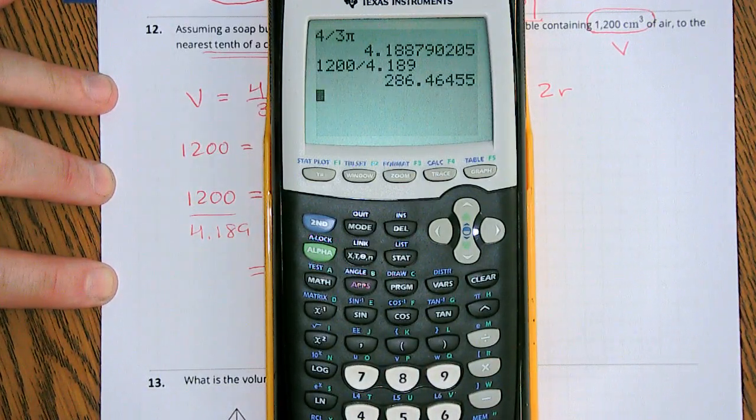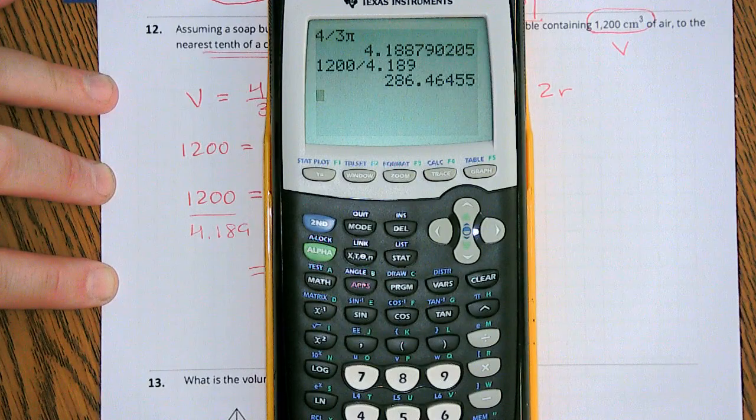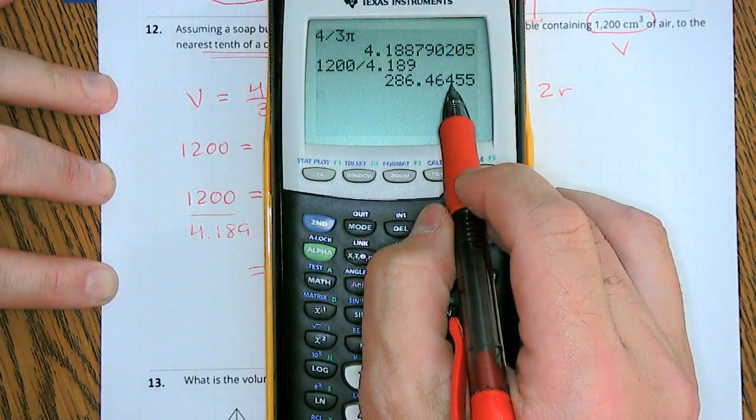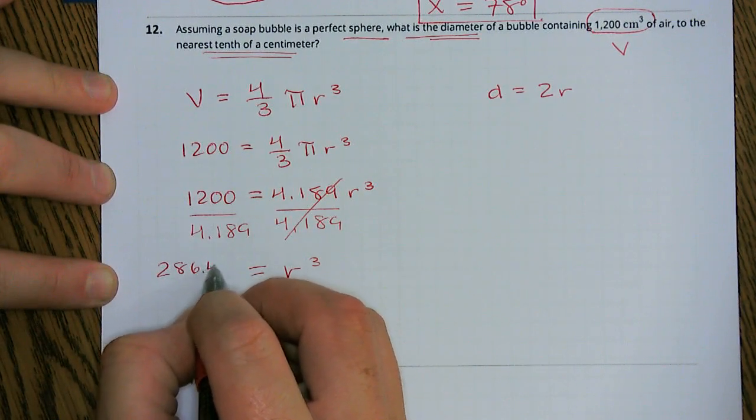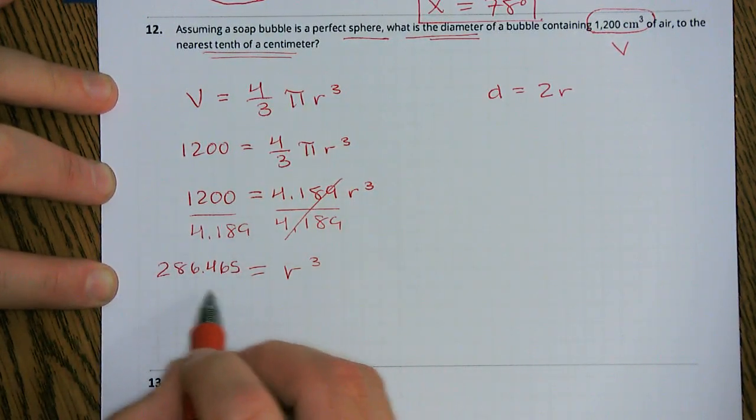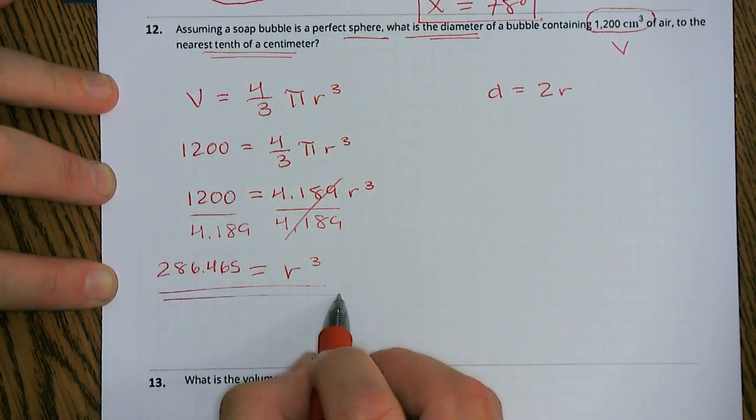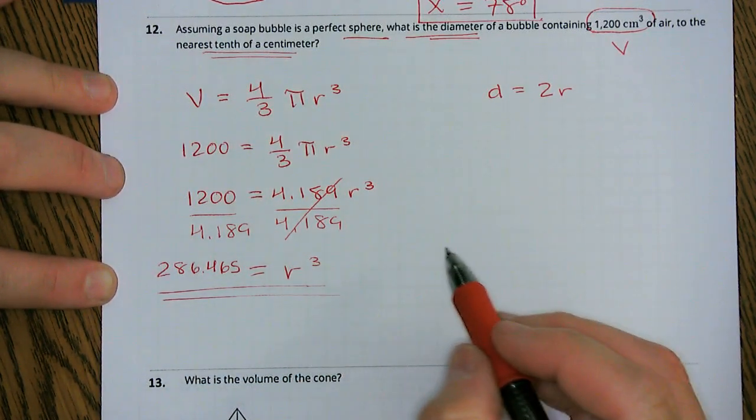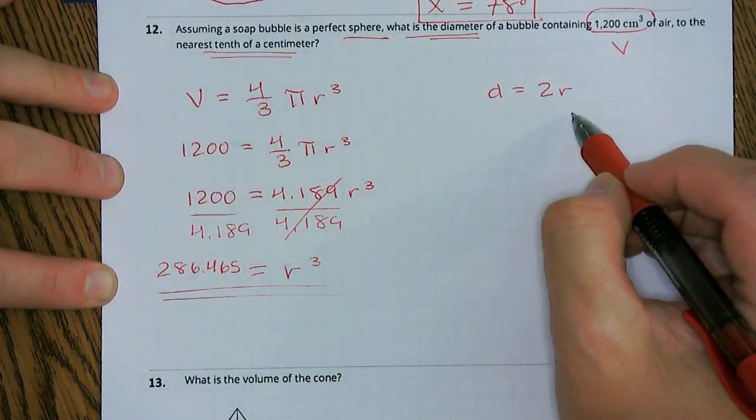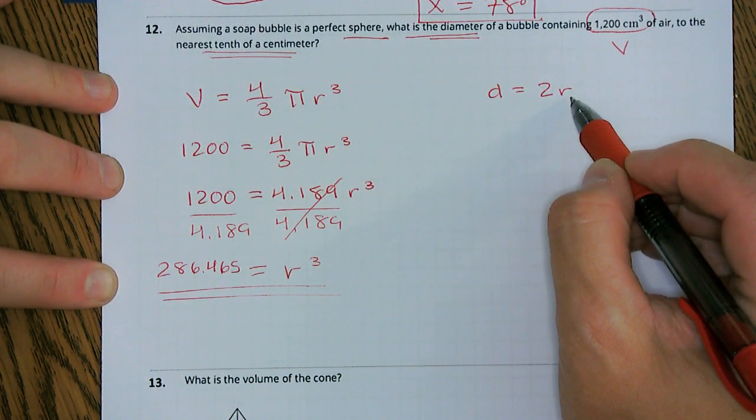So 1,200 divided by 4.189, in which case we get 286.465. Now this is our r to the third power. We're not there yet.